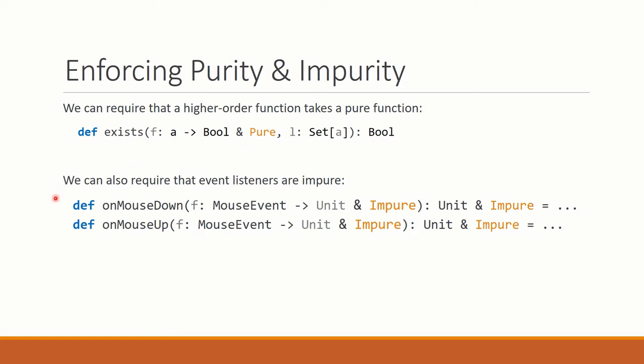In a similar way, we can also write higher order functions that require impure function arguments. For example, when registering event listeners, we can require that the functions passed in are impure. This makes sense because event listeners are only executed for the effect, never for the return value, which in this case are unit in both cases.